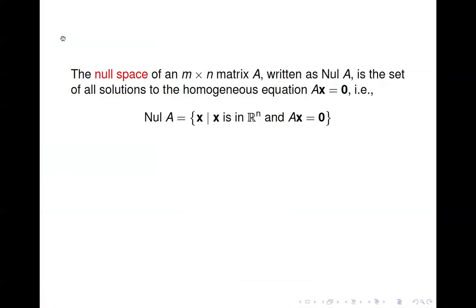In section 4.2 we're going to talk about a couple of concepts where we're not familiar with the terminology, but we are familiar with the concepts behind these terms. The first of these is the null space of a matrix. We say the null space of an M by N matrix A, written as null(A), is the set of all solutions to the homogeneous equation Ax equals 0.